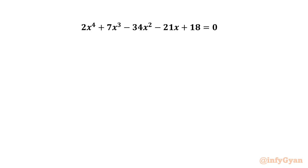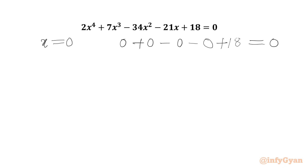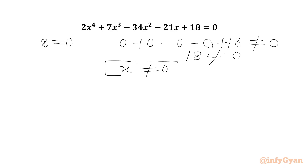Let's get started by checking our equation at x = 0. The LHS gives us 0 + 0 - 0 - 0 + 18, and the right hand side is 0. From LHS we are getting 18, and RHS is 0, which is not true. So we can say x cannot be equal to 0 for our given equation.